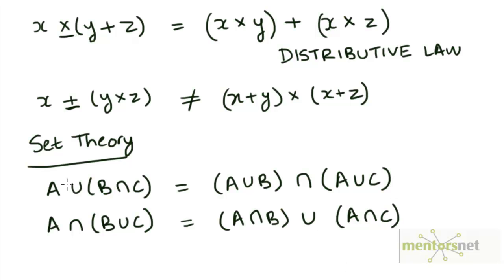So this is the distributive law for set theory. In set theory, the union operator distributes over the intersection operator, and the intersection operator also distributes over the union operator. Now, do you think you can prove both of these?